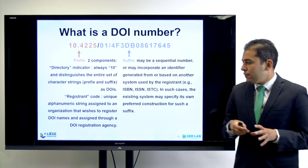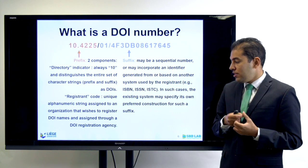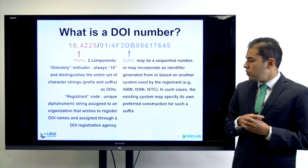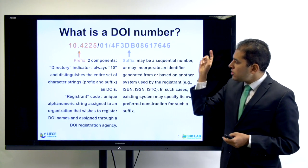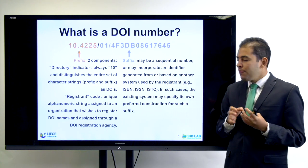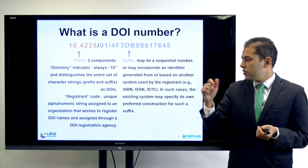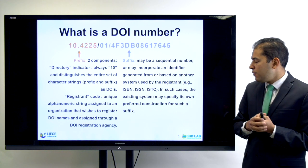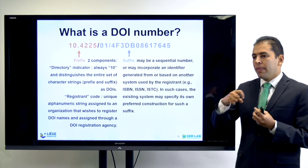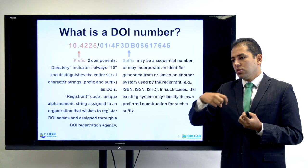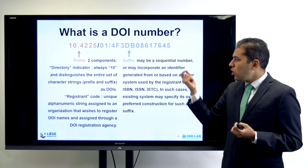The registered code is a unique alphanumeric string assigned to an organization that wishes to register DOI names, and it is assigned through a DOI registration agency. Then it comes to the suffix — this is the rest of the number. The suffix may be a sequential number or it may incorporate an identifier generated based on another system used by the registrant. It can be coupled to the ISBN or ISSN, for example, and in such cases the existing system may specify its own preferred construction for the suffix. So it may be an editor, a university, or an institution that has its own registrant code and develops their own logic for the suffix.